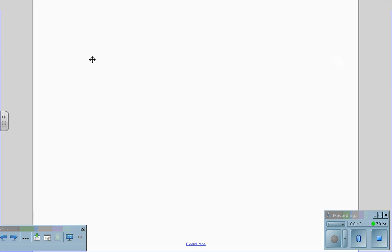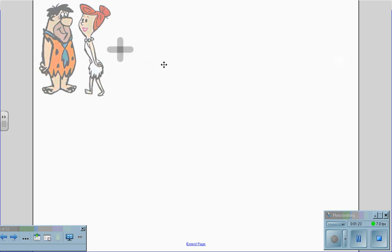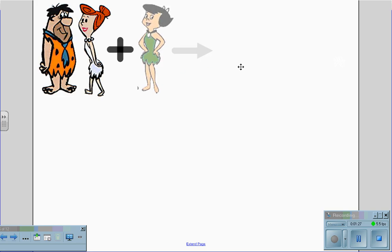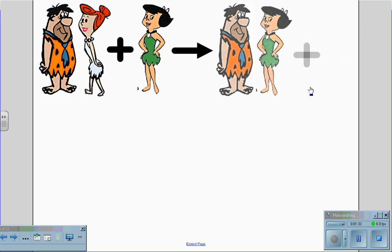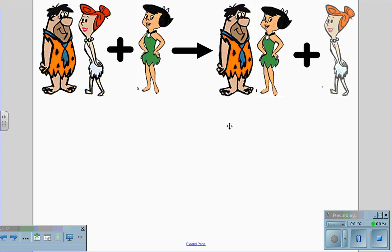If however the Flintstones went to a dance and they met up with Betty, and when Betty showed up, she ended up with Fred leaving Wilma by herself, we would call this single replacement.